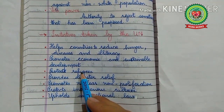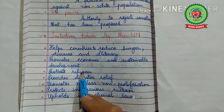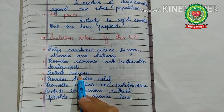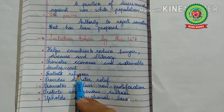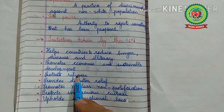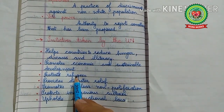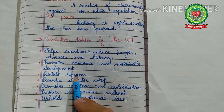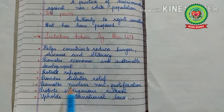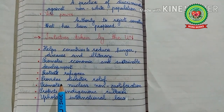The next initiative is to protect refugees. More than 60 million refugees fleeing persecution, violence, and war have received aid from the United Nations. There are many refugees, internally displaced persons — mostly women and children — who are receiving food, shelter, medical aid, and education from the United Nations. The next initiative is providing disaster relief.